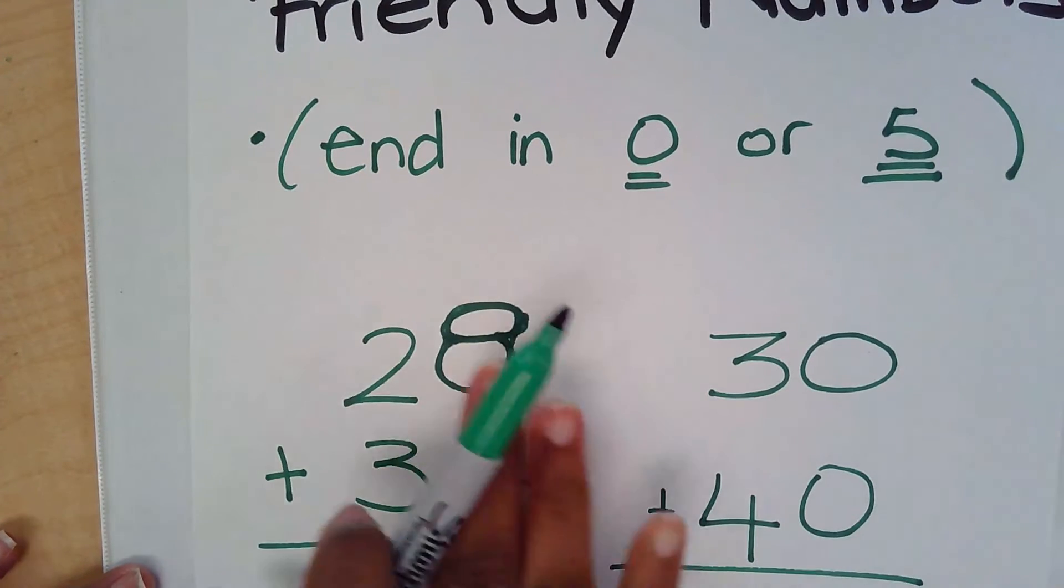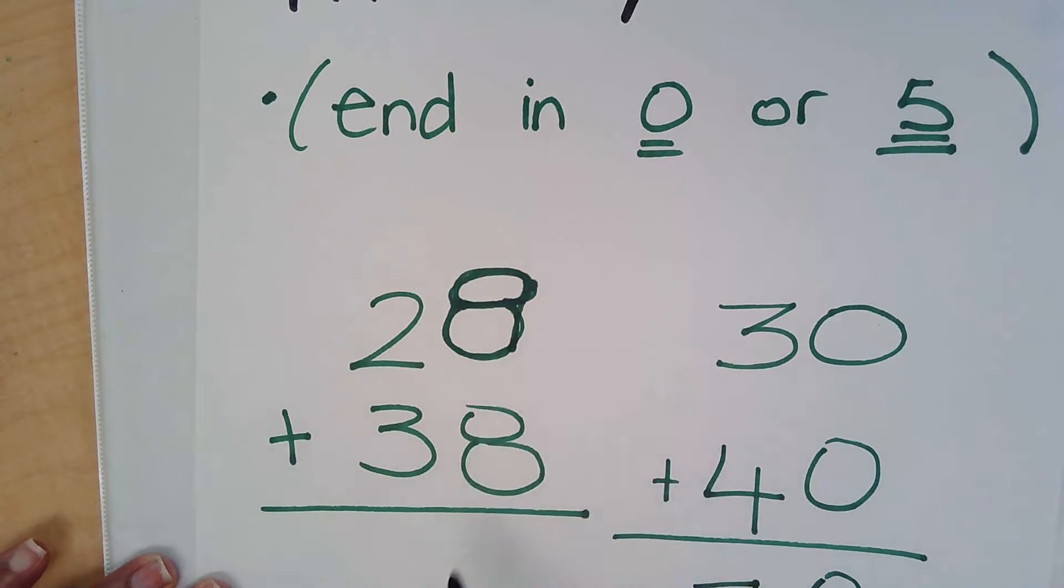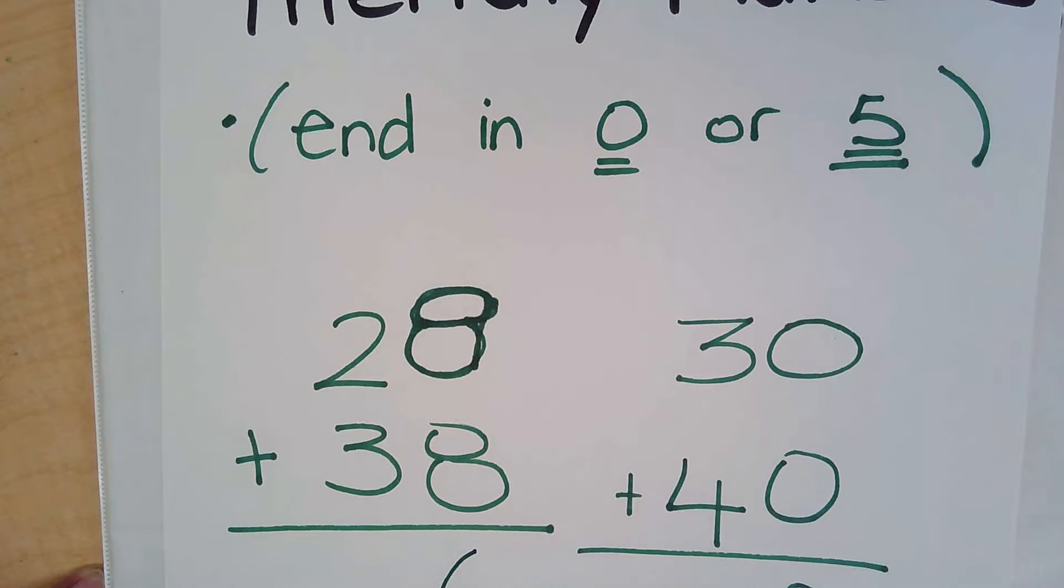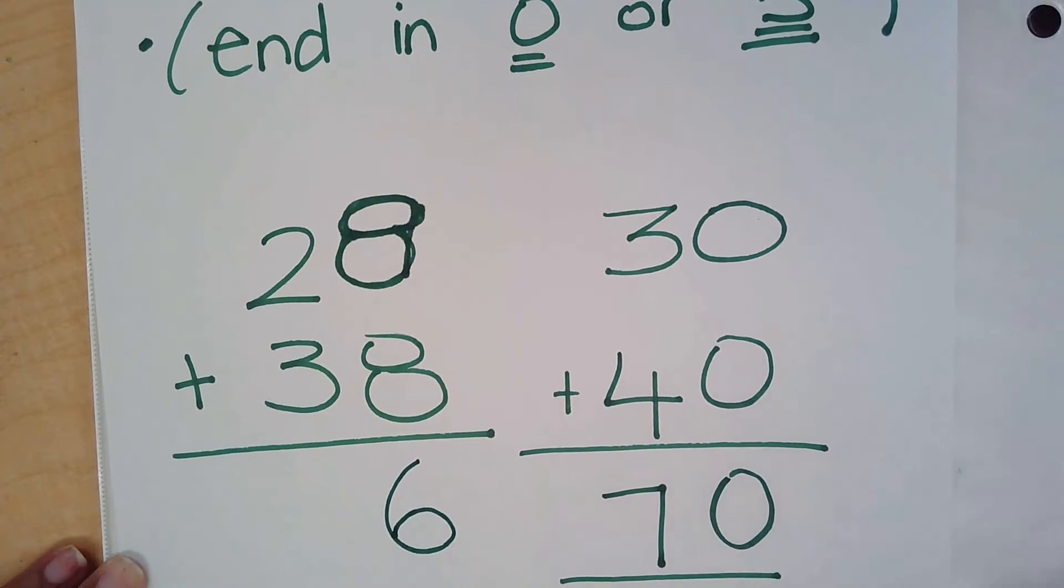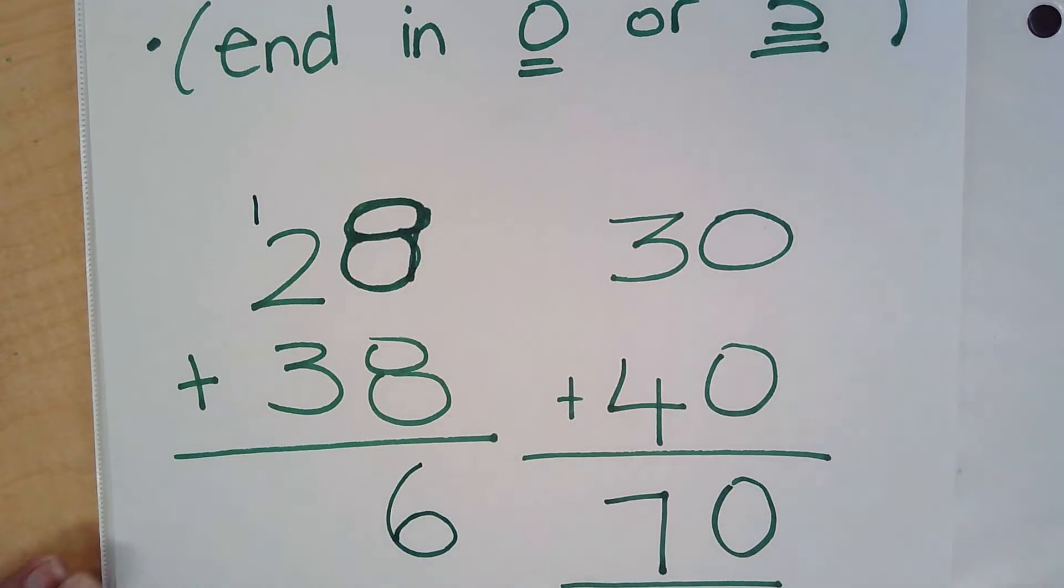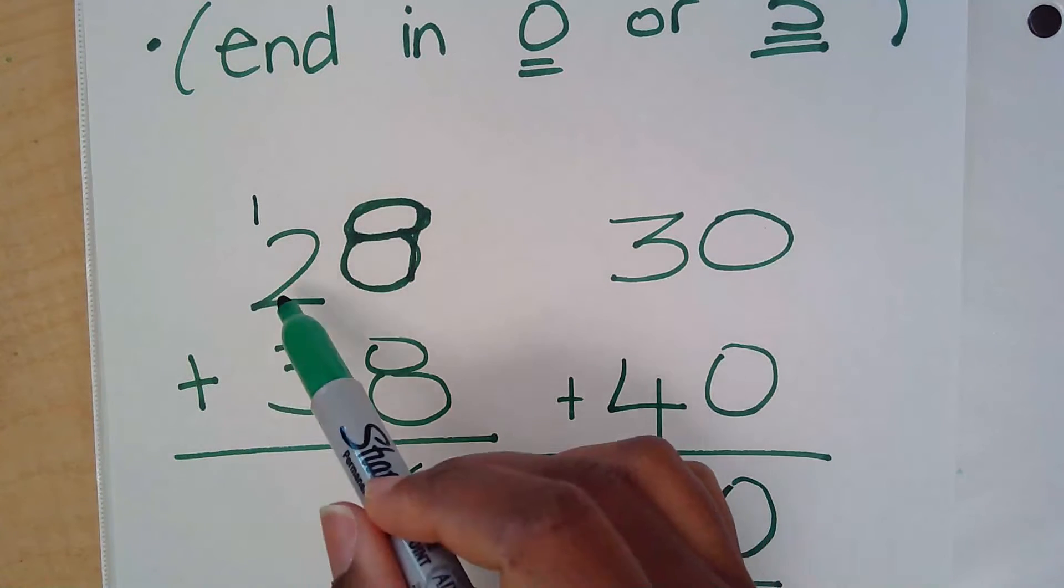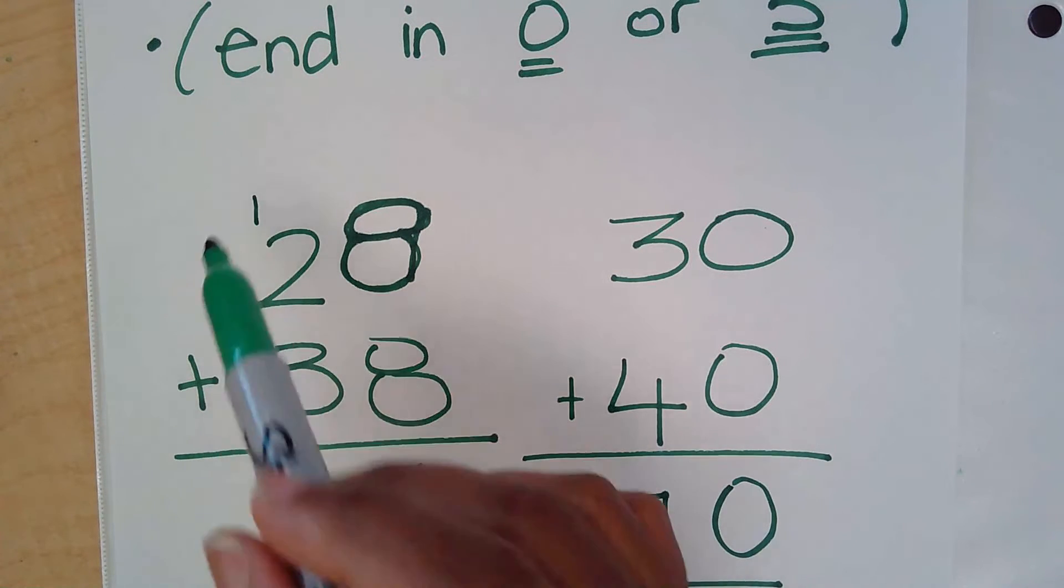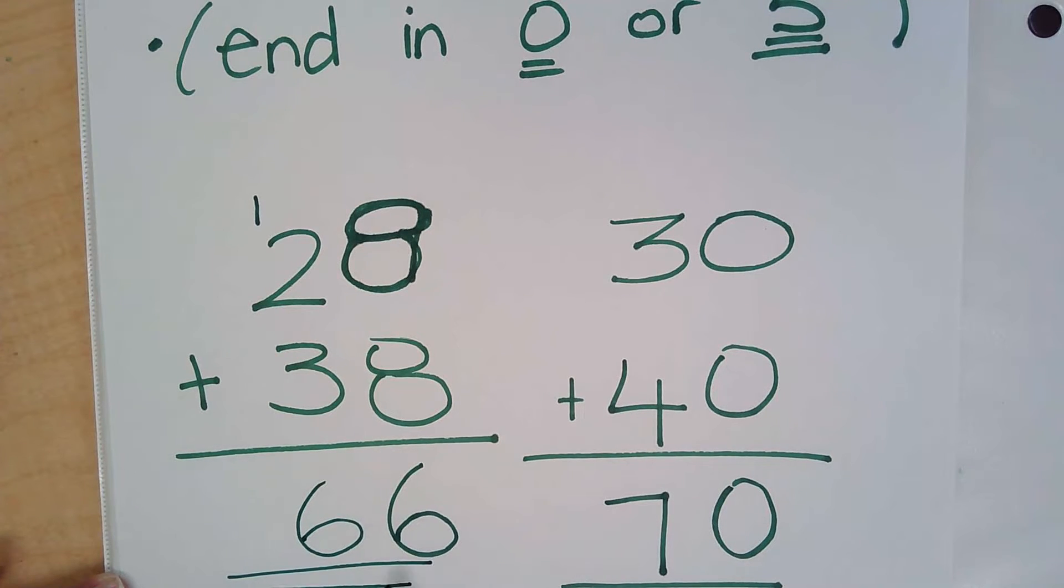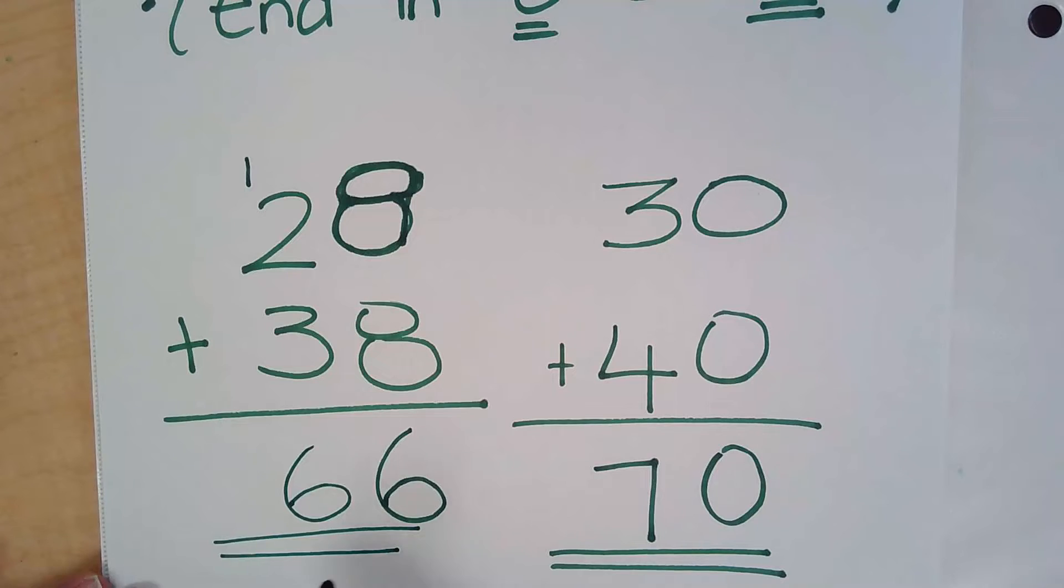Now, let's work this problem out on its own. 8 plus 8 is 16. I carry my 6 ones, and then I carry my 1 ten here. 3 plus 2 is 5, and 5 plus 1 is 6. When I solved it with the exact numbers, my answer is 66. But when I use my compatible numbers, my answer is 70.